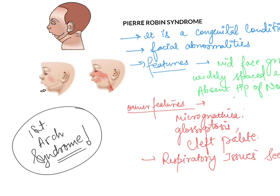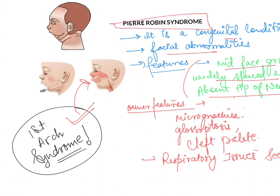This is a congenital condition where facial abnormalities can be seen in the patient. Features include a mid-facial groove, widely spaced eyes, and absence of the tip of the nose. This happens because the first pharyngeal arch, which is responsible for the formation of the face and palate, is not forming properly.